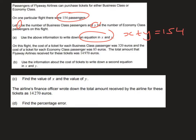We're then told that the cost of a business class ticket is 320 euros and the cost of an economy class ticket is 85 euros, and the total amount the airline received was 14,970 euros. To construct a second equation, if each business class ticket was 320 euros and X is the number of business class passengers, we multiply those together to get the revenue from business class passengers, which is 320X.